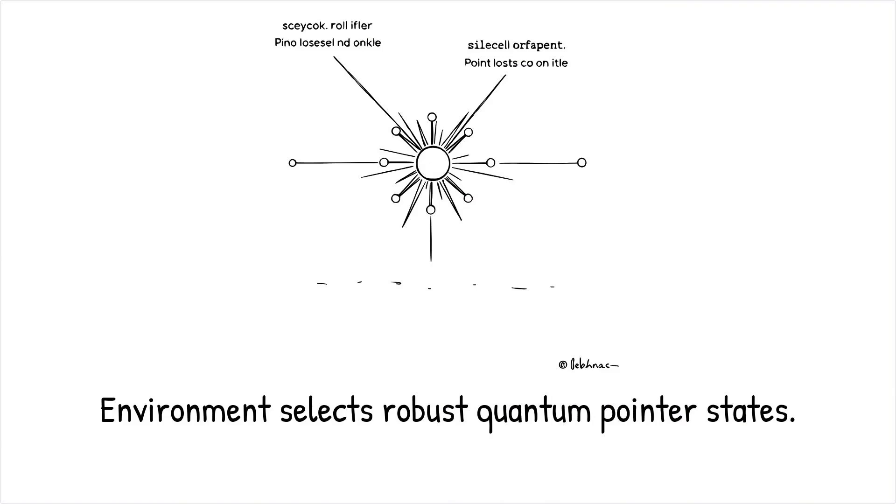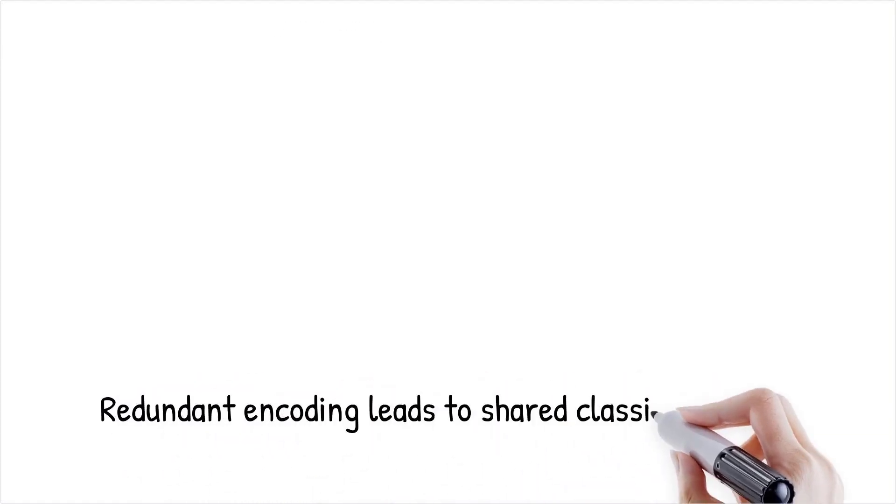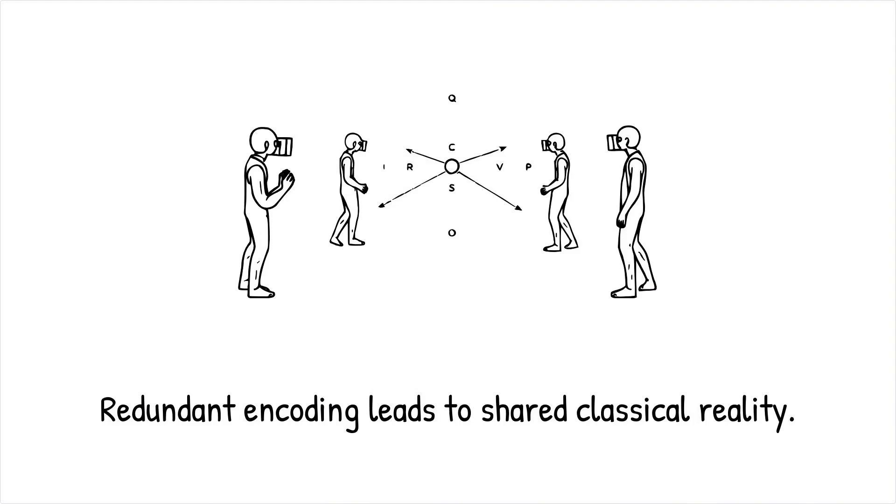When a quantum system interacts with its environment, certain quantum states, called pointer states, prove robust against decoherence and are redundantly encoded in the environment. This redundancy allows these states to dominate and be accessible to multiple observers, creating a shared and consistent classical reality. Importantly, quantum Darwinism suggests that this process is akin to Darwinian evolution, where survival of the fittest applies to quantum states that can withstand environmental interactions.